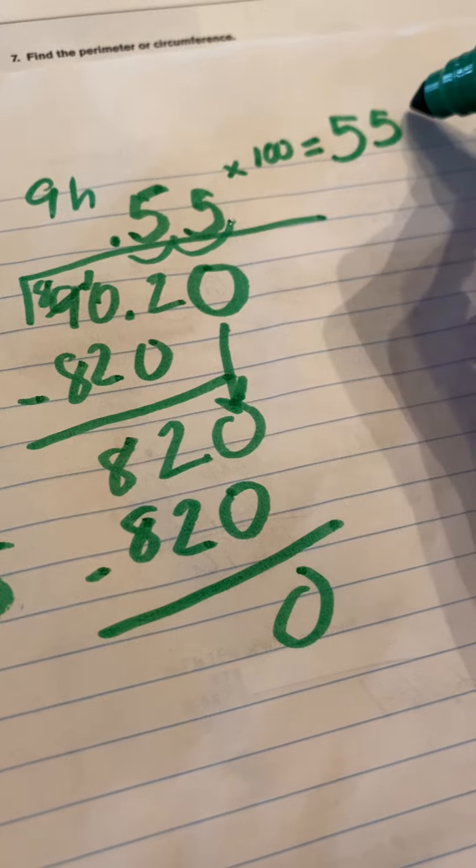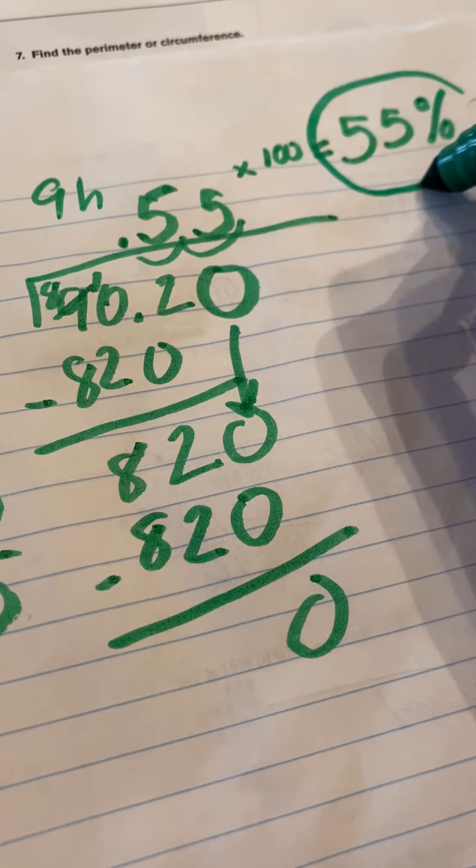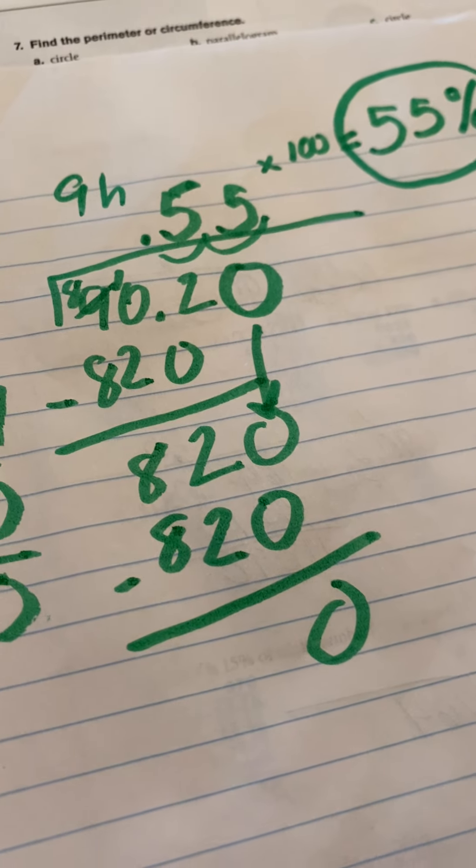So our final answer is 55%. And by the way, multiplying by 100, that means we move our decimal twice. So that's how we get 55 and a percent. Hope that helps.